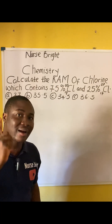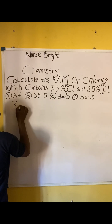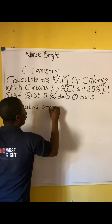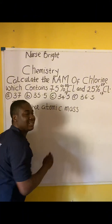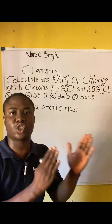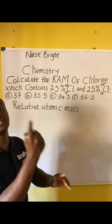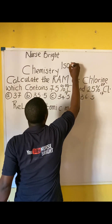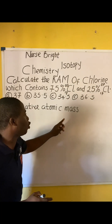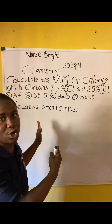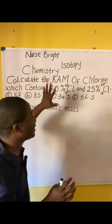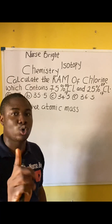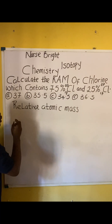They are asking us to calculate the RAM, which simply means relative atomic mass. Whenever you see a practice question in chemistry, you have to note the topic it is from. This question is on a very vital aspect in chemistry called isotopy and relative atomic mass calculations. There is a formula to note for relative atomic mass.